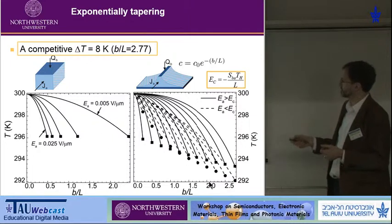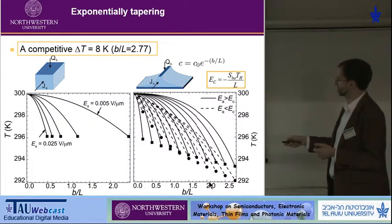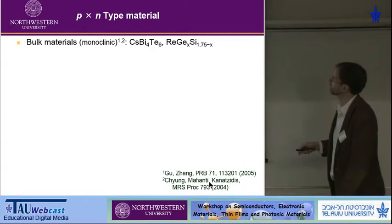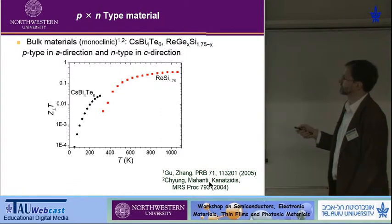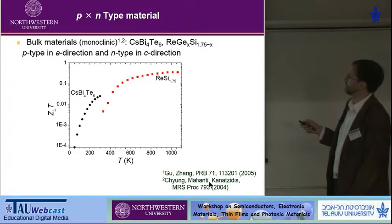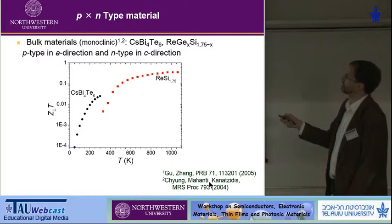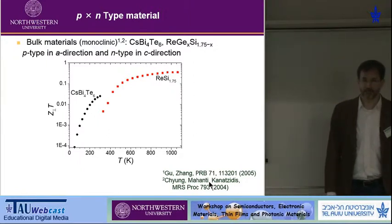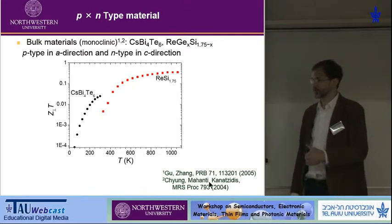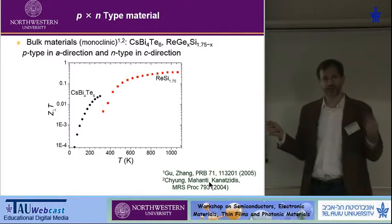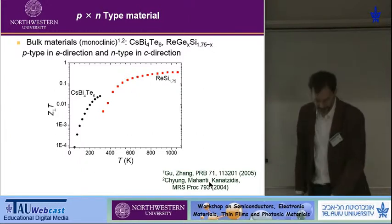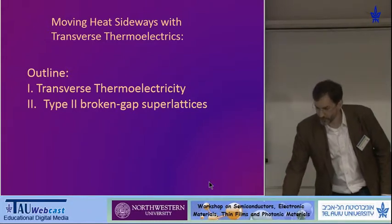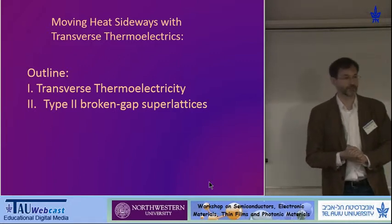There are also bulk materials — cesium bismuth telluride and rhenium silicide — that show this funny behavior of being p-type in one direction and n-type in the other. I believe there's a lot of interesting material science to explore here: investigating related compounds with a narrow enough gap to thermally populate both electrons and holes, with some non-cubic band structure anisotropy that gives p-type conduction in one direction and n-type in the other. That concludes my talk. I'm happy to take questions, and we're hoping to move forward with experiments on these materials.